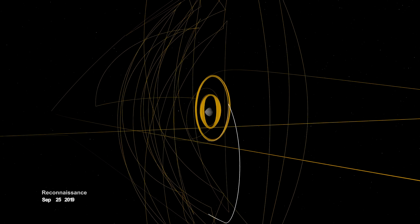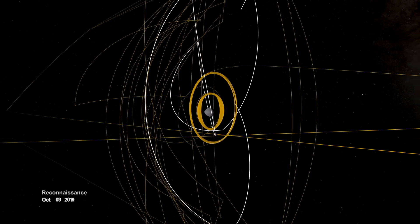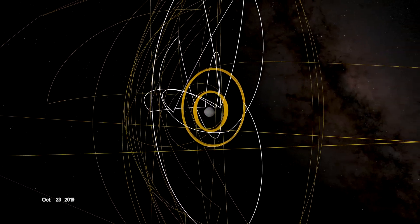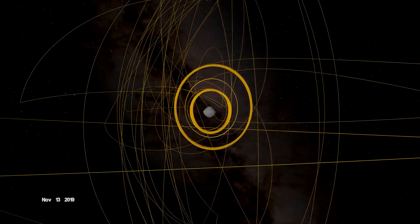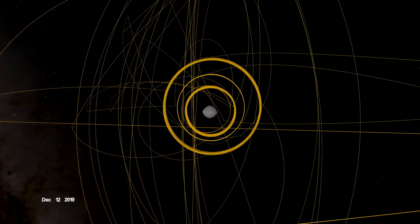In September, it began reconnaissance on four candidate sample collection sites, potential locations on Bennu to touch down and collect a sample later in the mission. OSIRIS-REx concluded its first year at Bennu back in orbit, circling the asteroid's terminator, or boundary, between day and night.